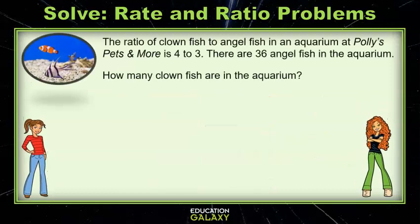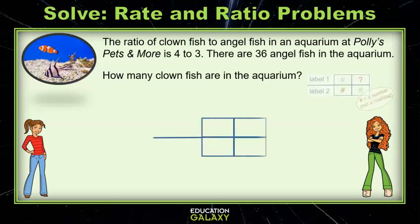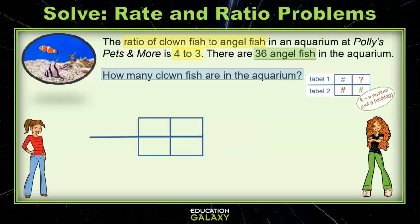Let's look at a practice problem. The first thing you need to do is draw your graphic organizer and highlight the important information. And that includes the questions, guys. In this problem, we're told that the ratio of clownfish to angelfish is 4 to 3. We know there are 36 angelfish in the aquarium.